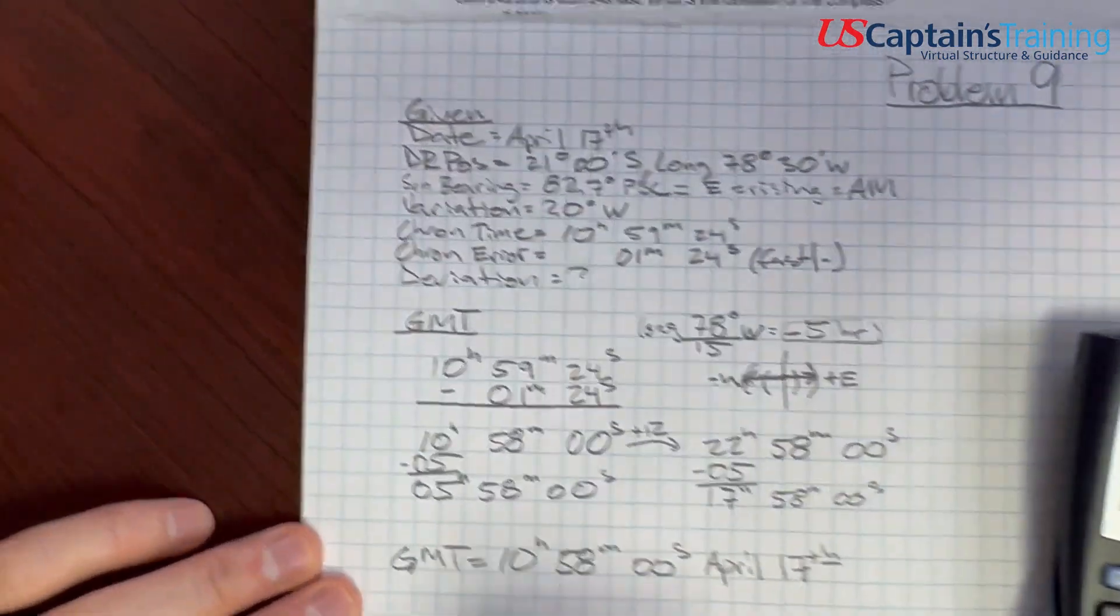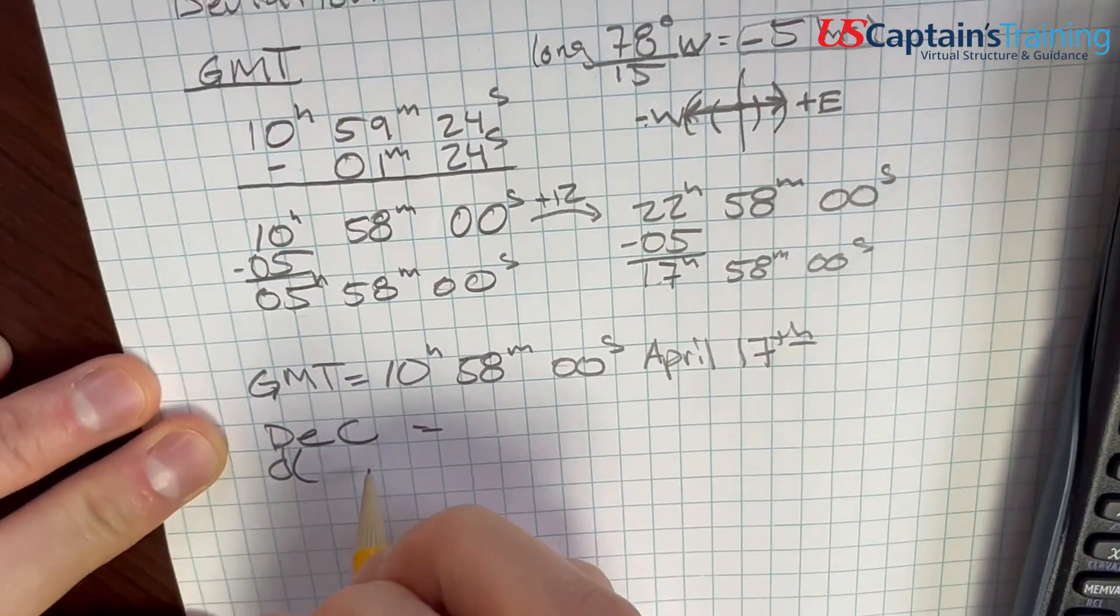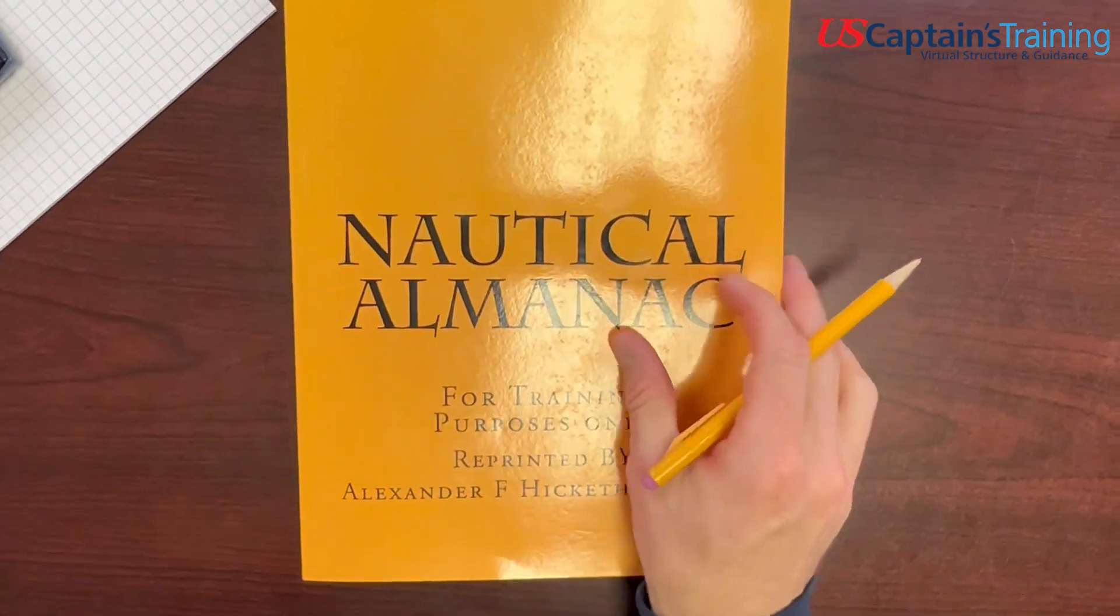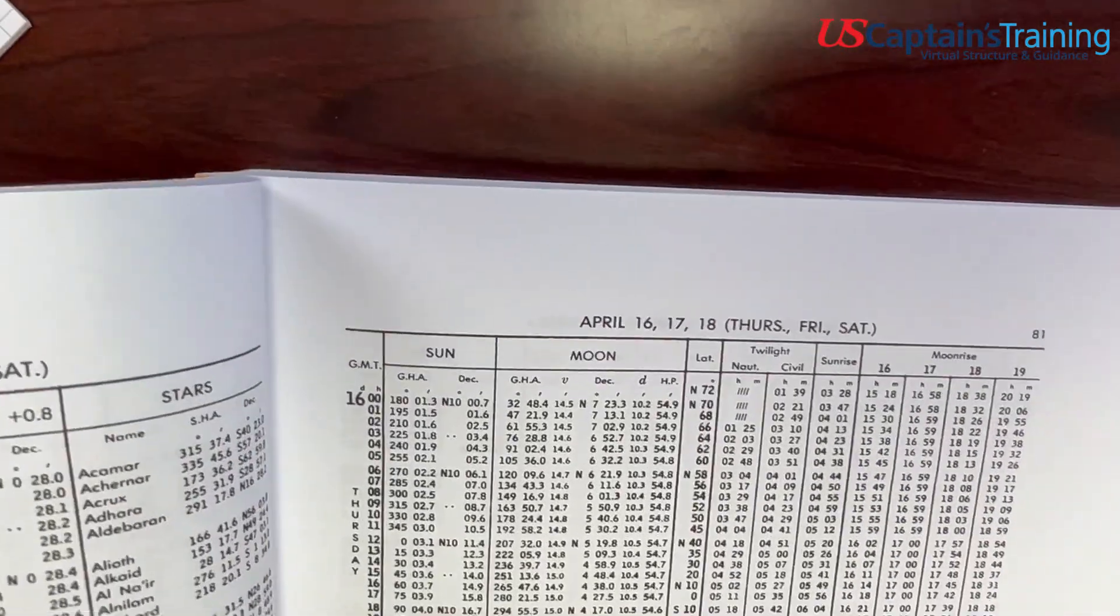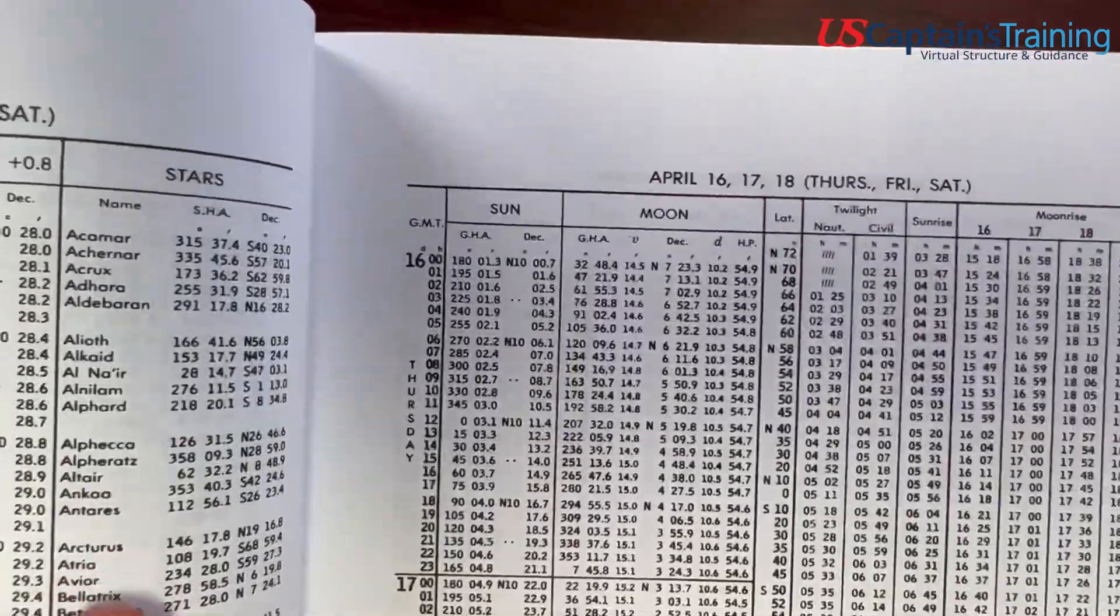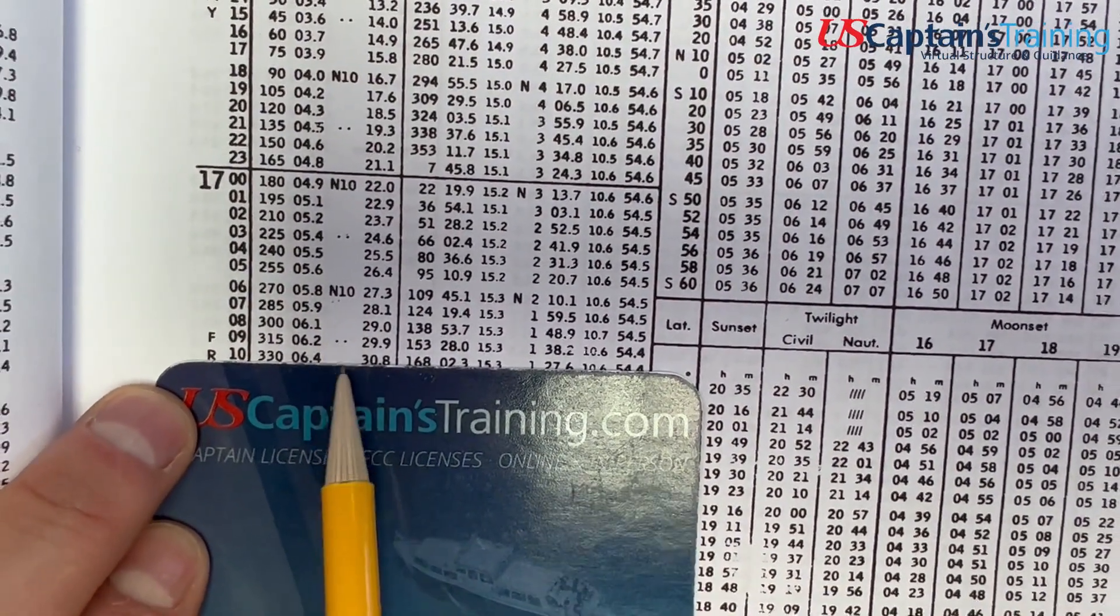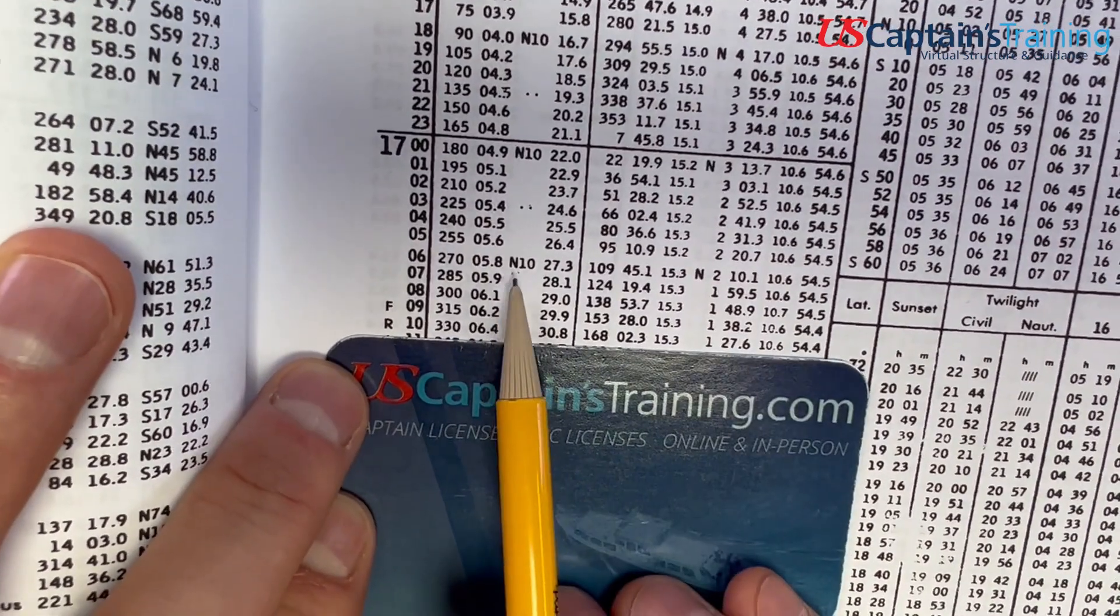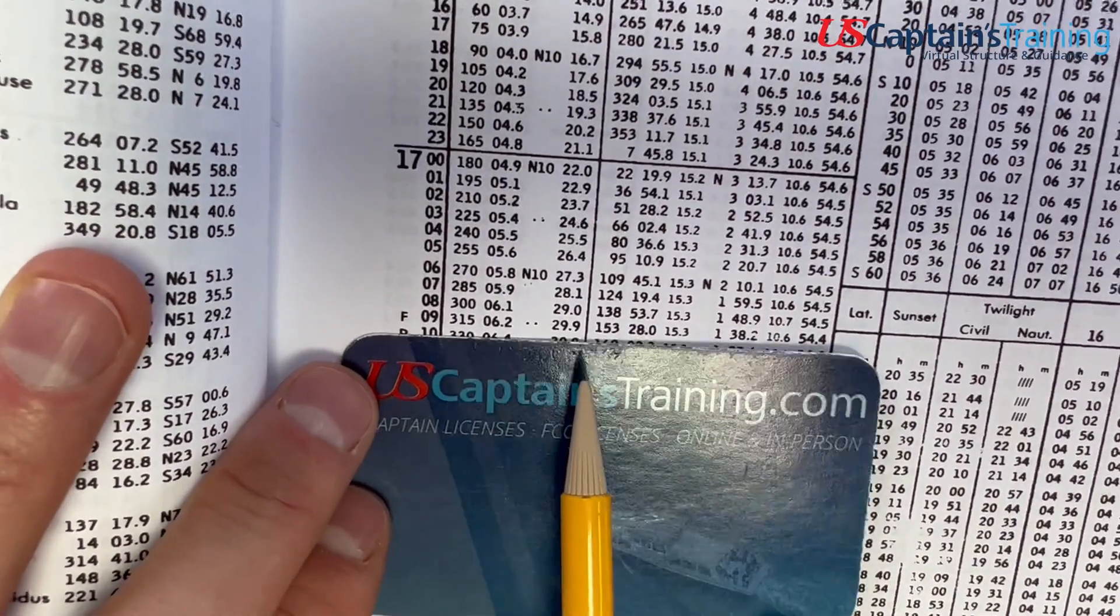Okay. With the GMT, excuse me, we can get into the nautical almanac and we can find our declination. So we're going to get our declination and our D value. And if we add or subtract that. So let's go GMT, April 17th, 10 hours. April 17th. And we're at 10 hours. 10 hours. Okay. 17, 10 hours. North 10. So it carries down. North 10, 30.8. And is it getting bigger or smaller? It's getting bigger. North 10, 30.8. Getting bigger.